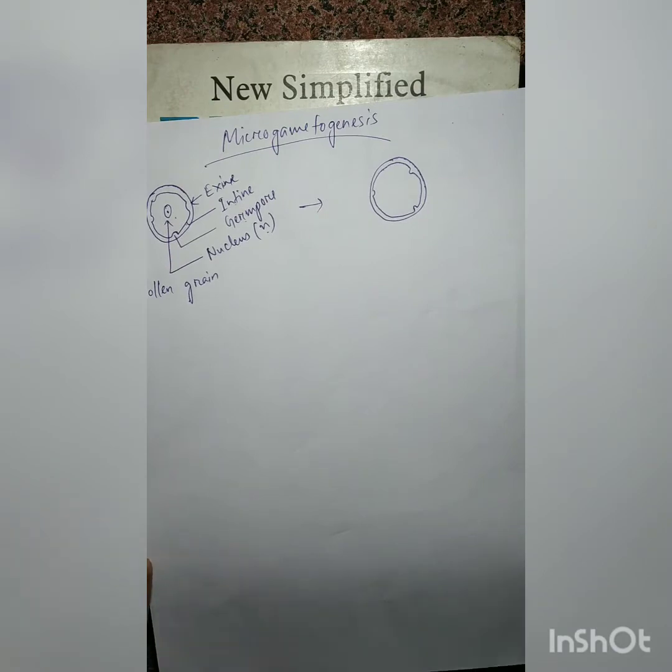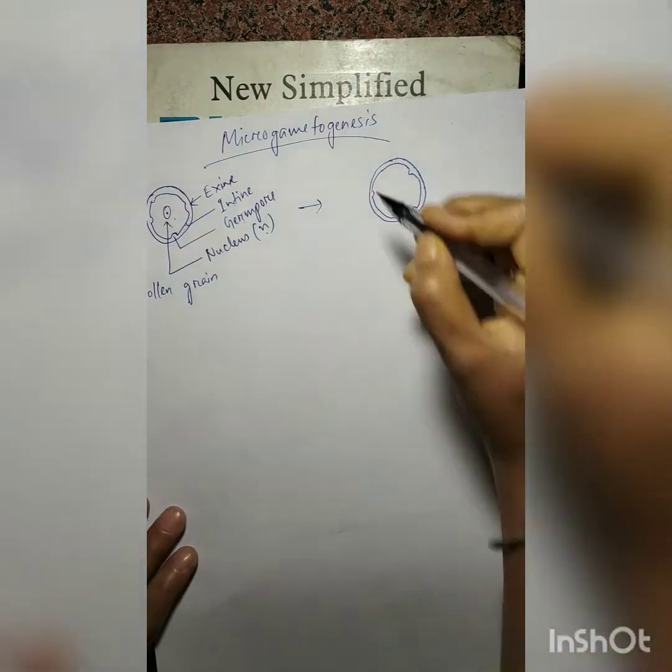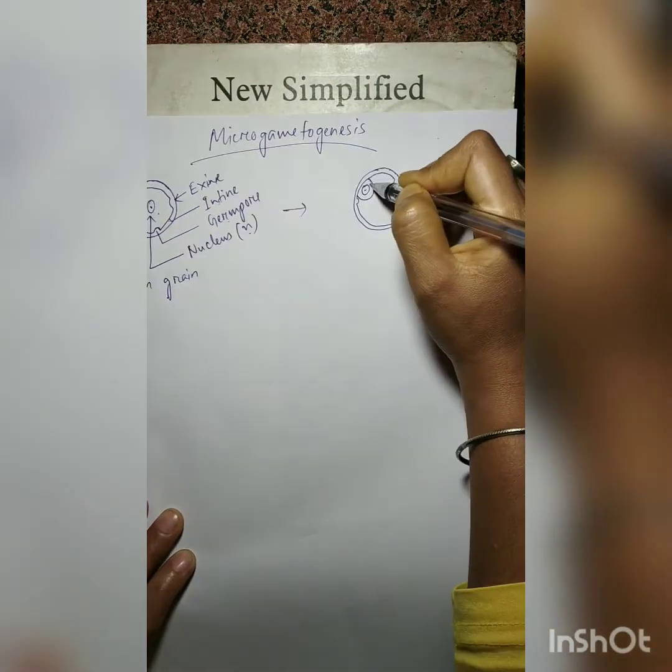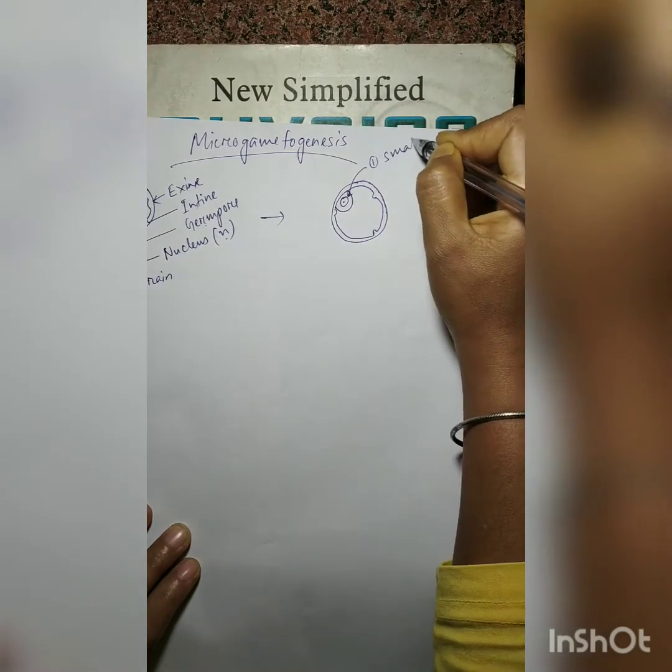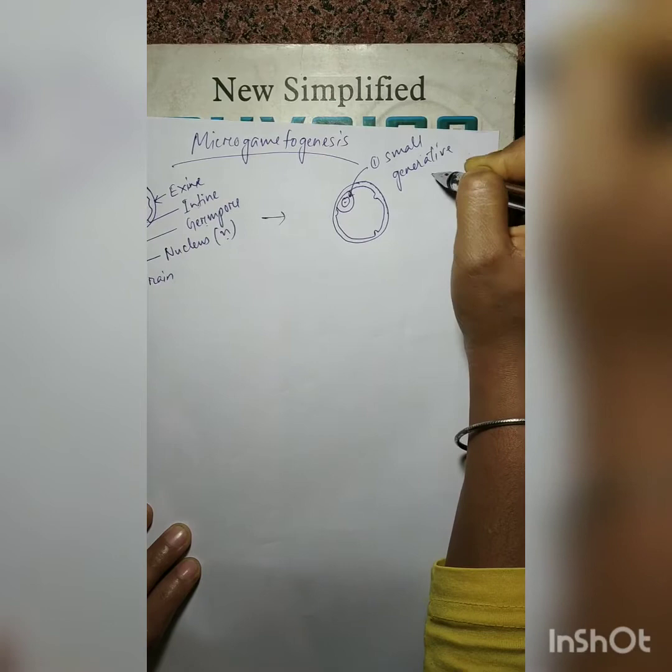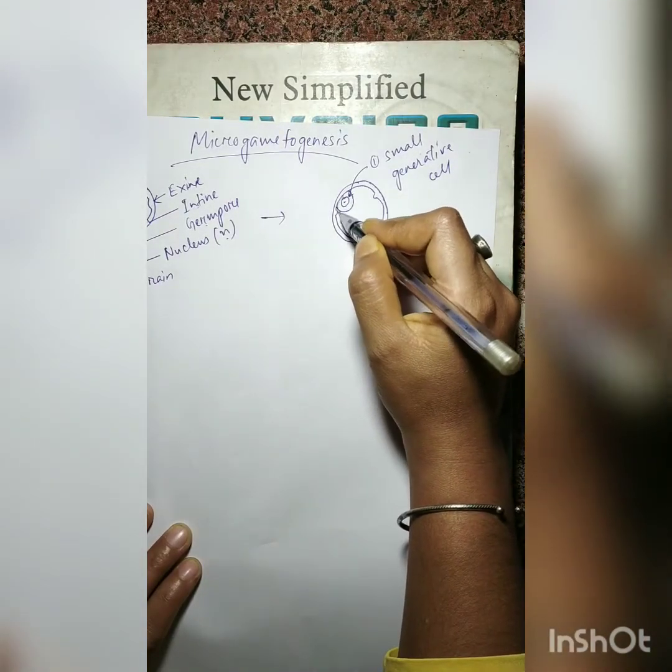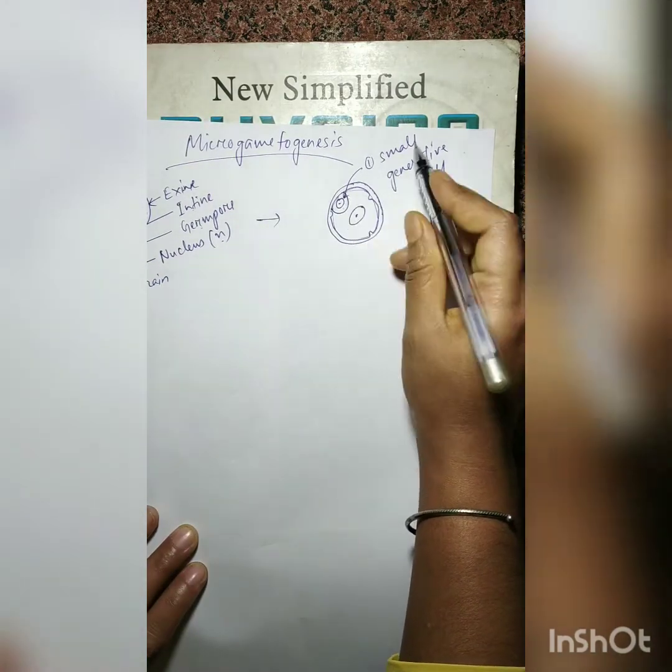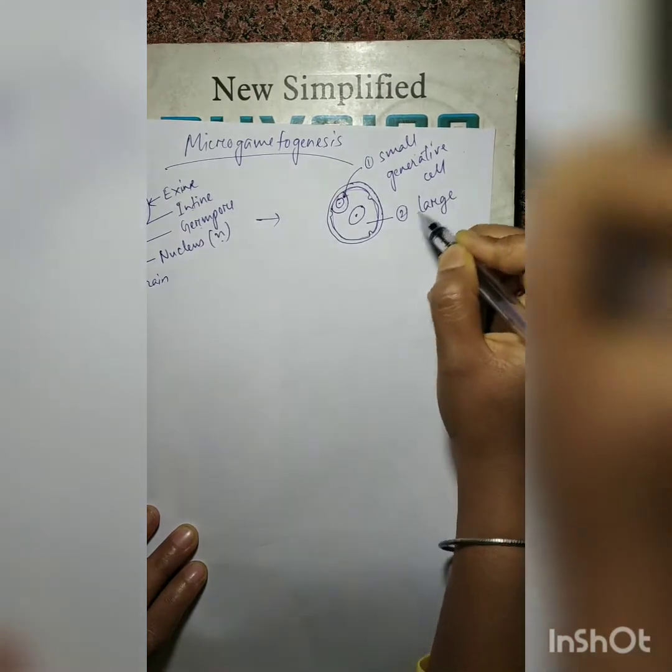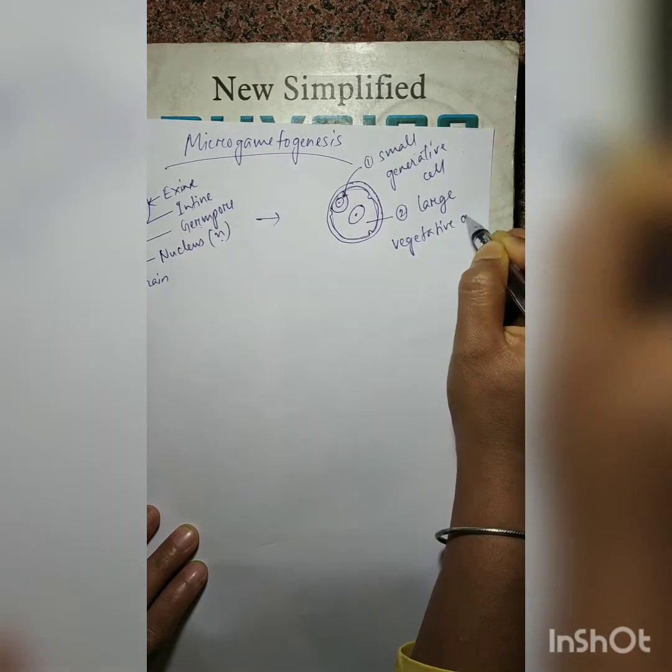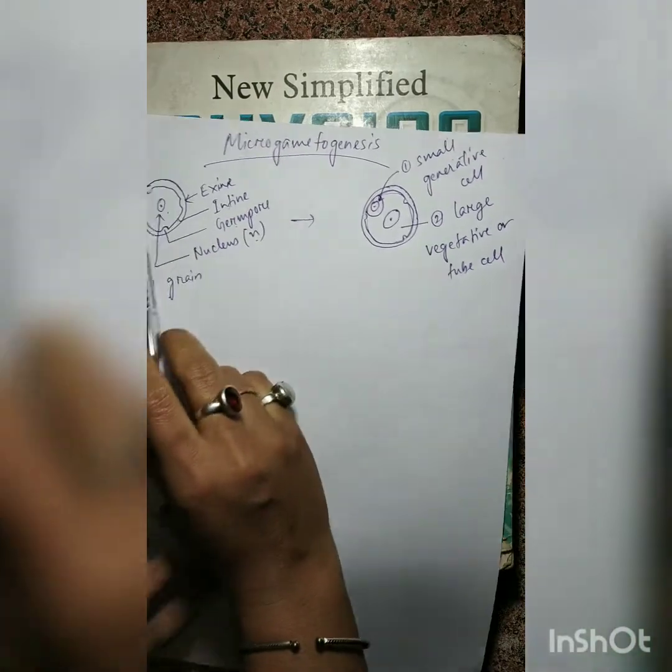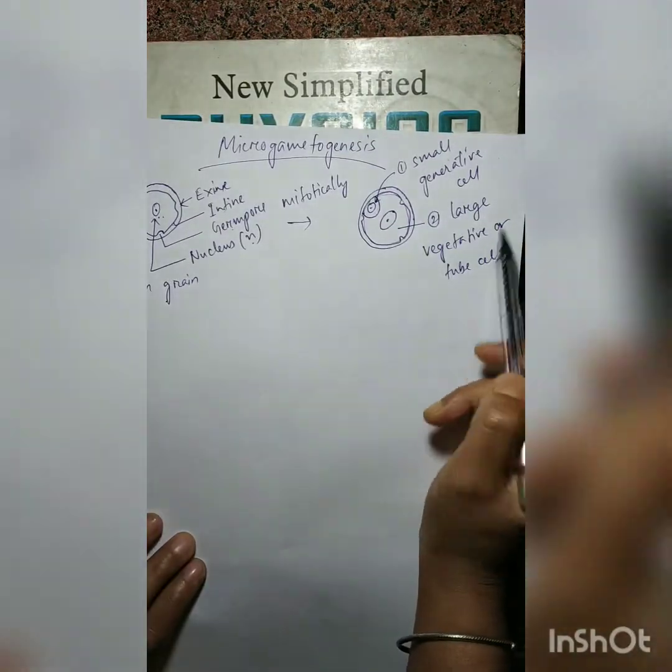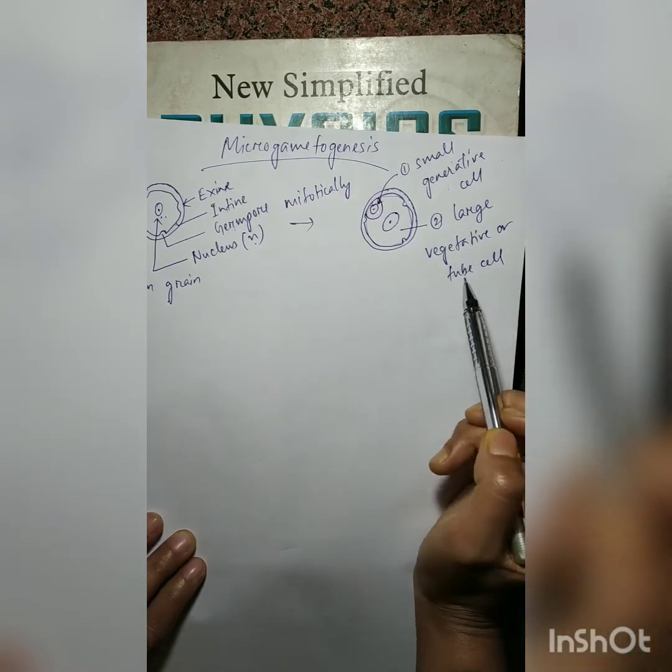But if you remember, the nucleus divides to form two nuclei, but it produces one small generative cell and this is your small generative cell, and a large, as compared to this cell, this cell is comparatively large and it possesses a large nucleus. So it produces a small generative cell and it produces a large vegetative or tube cell.